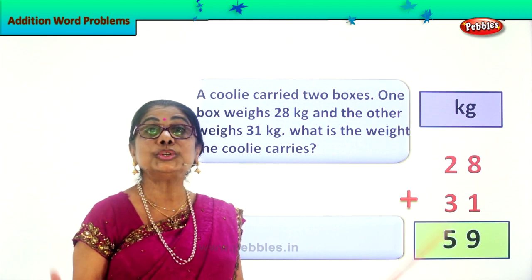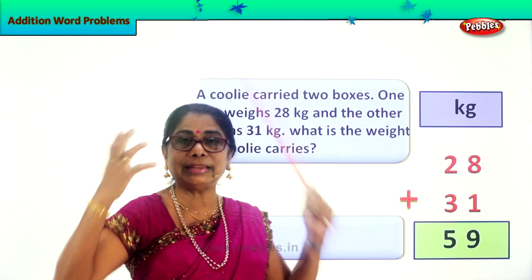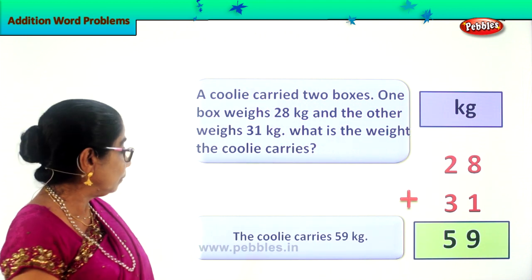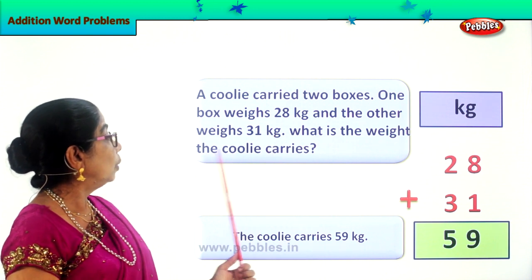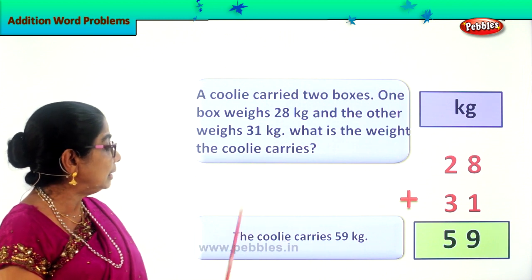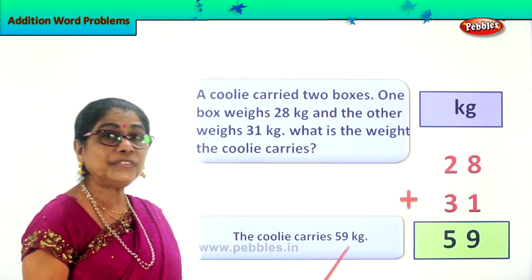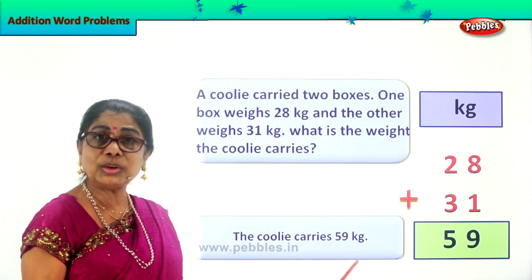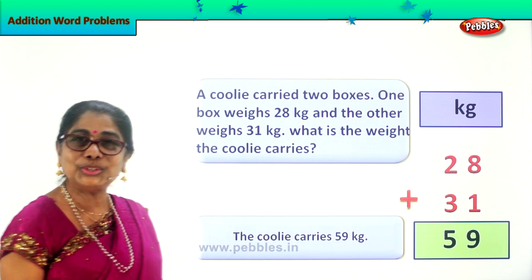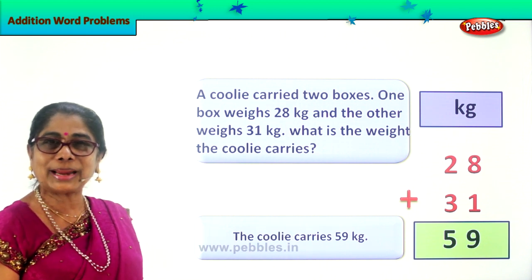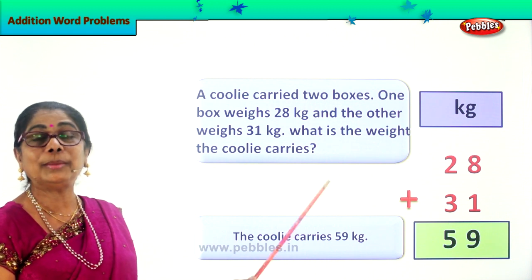A coolie carries two boxes weighing 59 kg on his head. So what is the answer? What is the weight the coolie carries? The coolie carries 59 kg. Did you enjoy the word problem in addition?